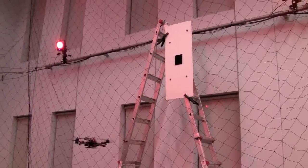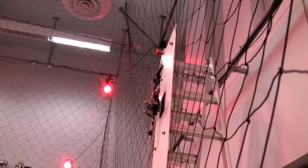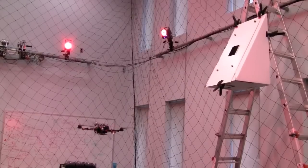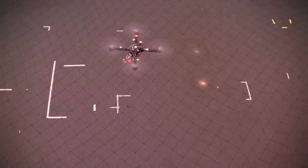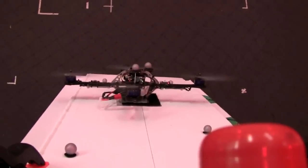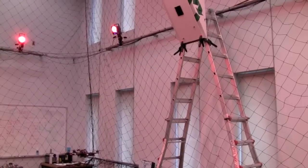By placing Velcro on the bottom of the quadrotor and on a target, the quadrotor can perch on a surface. Here we demonstrate perching on an inclined surface, and now on an inverted surface.